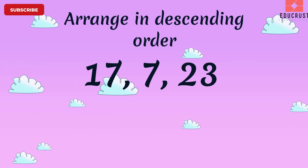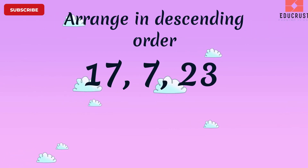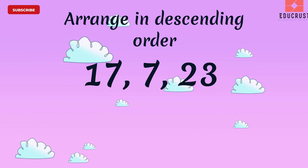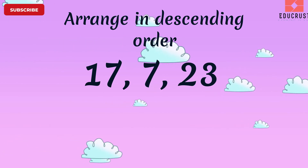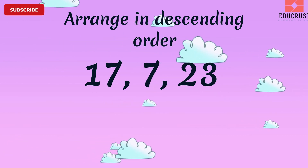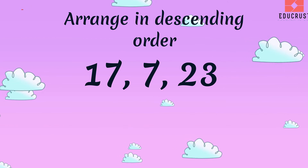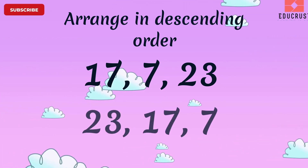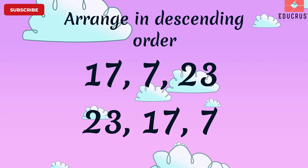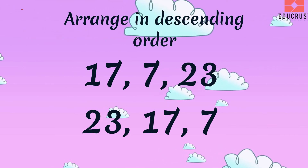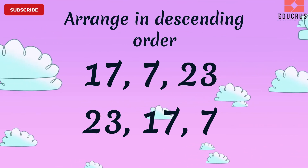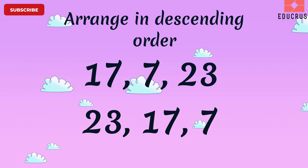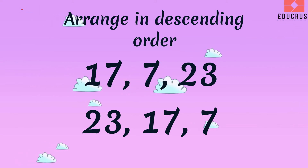Arrange the numbers 17, 7, 23 in descending order, or biggest to smallest. As per our rule, 23 will come first, then 17 will come, and 7 will come in the end.